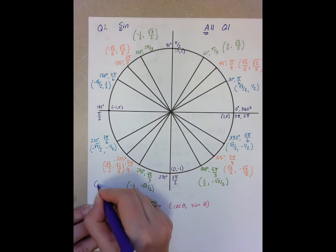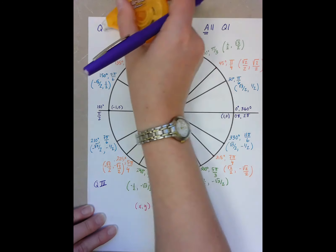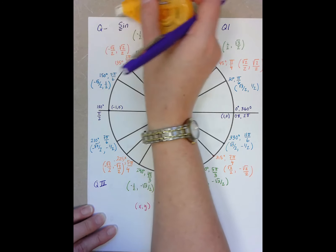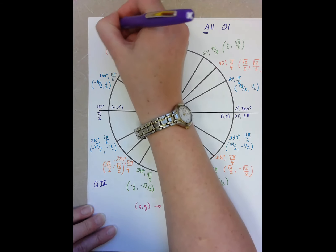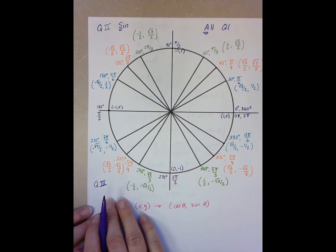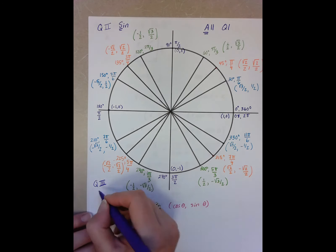In quadrant three, I should have made this a Roman numeral, I apologize. Just convention-wise, we always name our quadrants using Roman numerals. In quadrant three, we have that they're both negative, so sine and cosine are negative. But for tan, we divide sine and cosine, and a negative divided by a negative is a positive, so tan is positive.